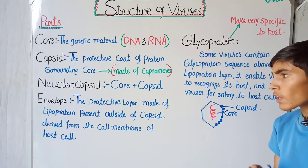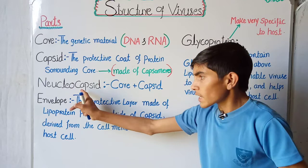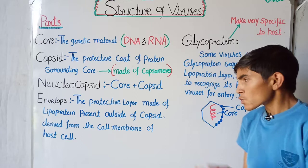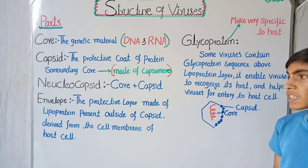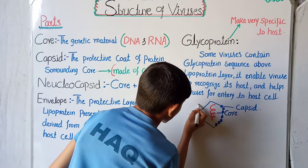The third part is the nucleocapsid. As the name suggests, it is capsid plus nucleus — the genetic material. So nucleocapsid is the combination of core plus capsid.